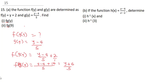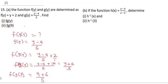Now the next question says we should find f of g of 9. To solve this, all you need to do is put 9 in place of y, which would be 9 plus 6 over 5. That gives you 15 over 5, and that will give you 3.